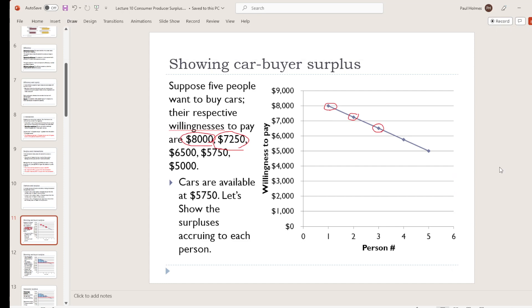Okay, so given that then, how can we show the surpluses that each of these people can obtain in the market? Well, what we can do is draw a line across at the price they're actually going to have to pay. And this is going to be tricky because my line drawing skills kind of suck. But there we go. There's the price that those people would be willing to pay. If we have a look at this person, this person would be willing to pay $8,000, they actually have to pay $5,750. So this distance here, this is their surplus that they can obtain.